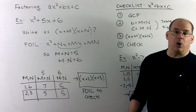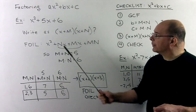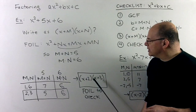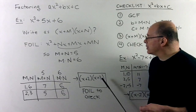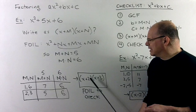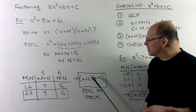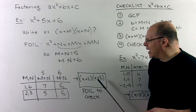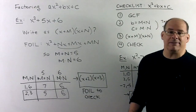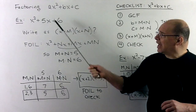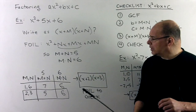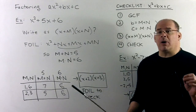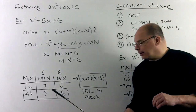We should FOIL as a check to wind up back at the original. If we take 2 times 3, we get the 6. The inside gives 2x, and the outside gives 3x; adding them gives 5x, as promised. That's our process for phase 1.